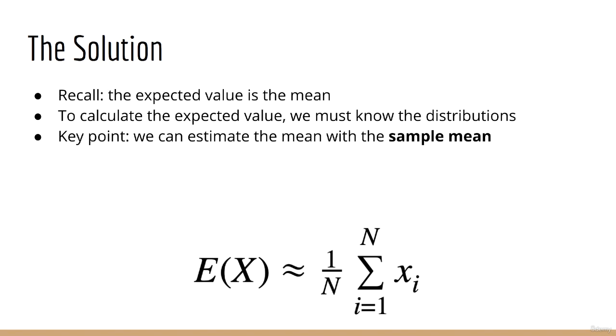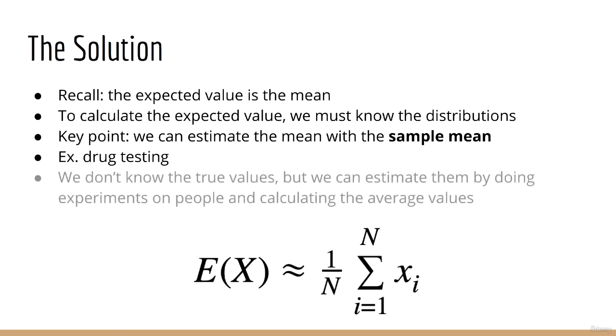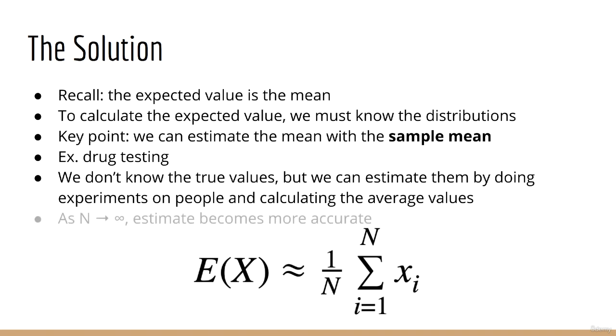This is called the sample mean. This is the basis for many scientific experiments. For example, if we want to test a drug, we don't know the true values, but we can do an experiment on a set number of people and calculate the average values. The sample mean is simply the sum of all the samples we collect, divided by the number of samples.